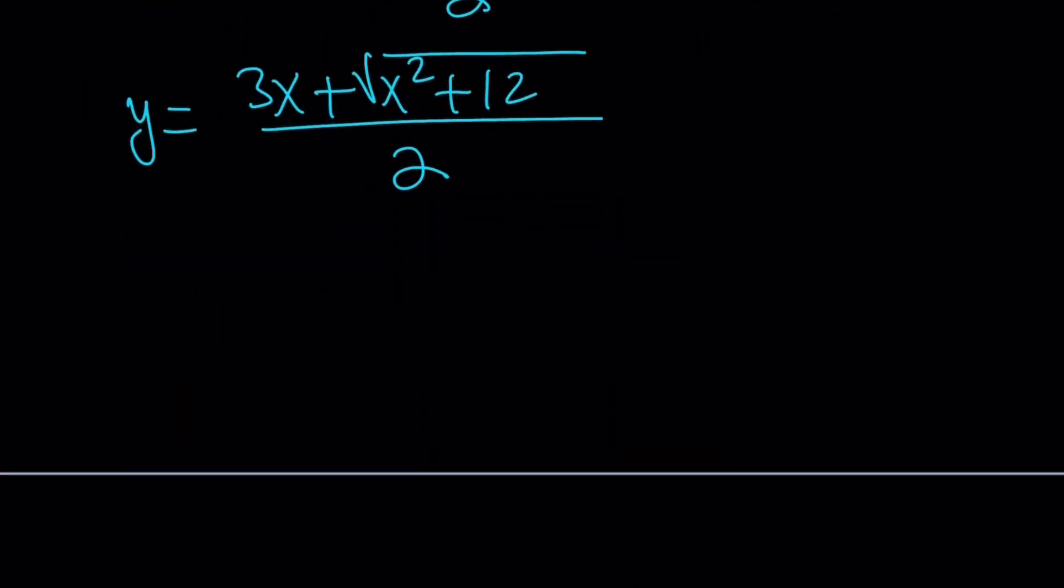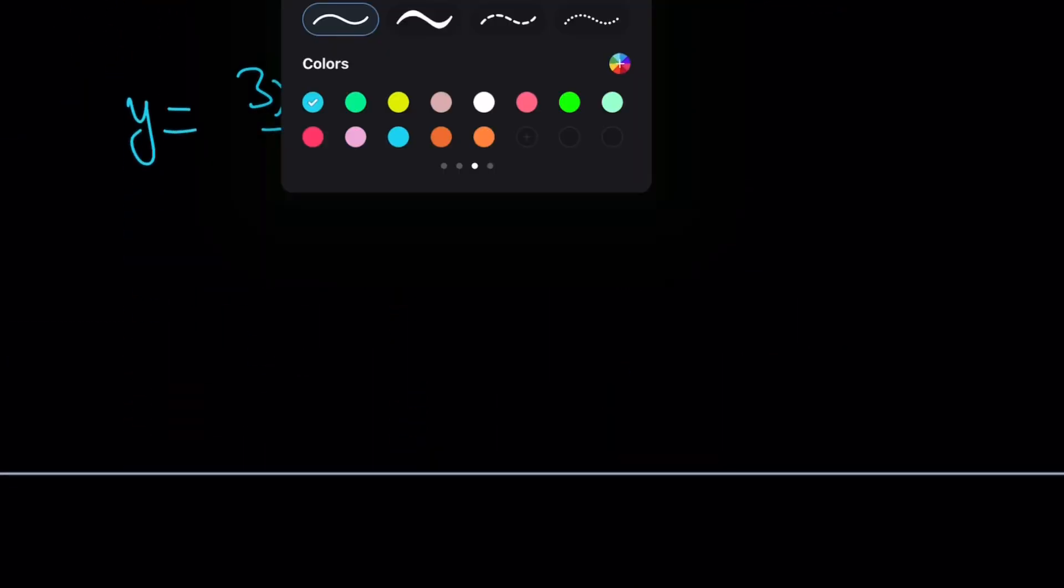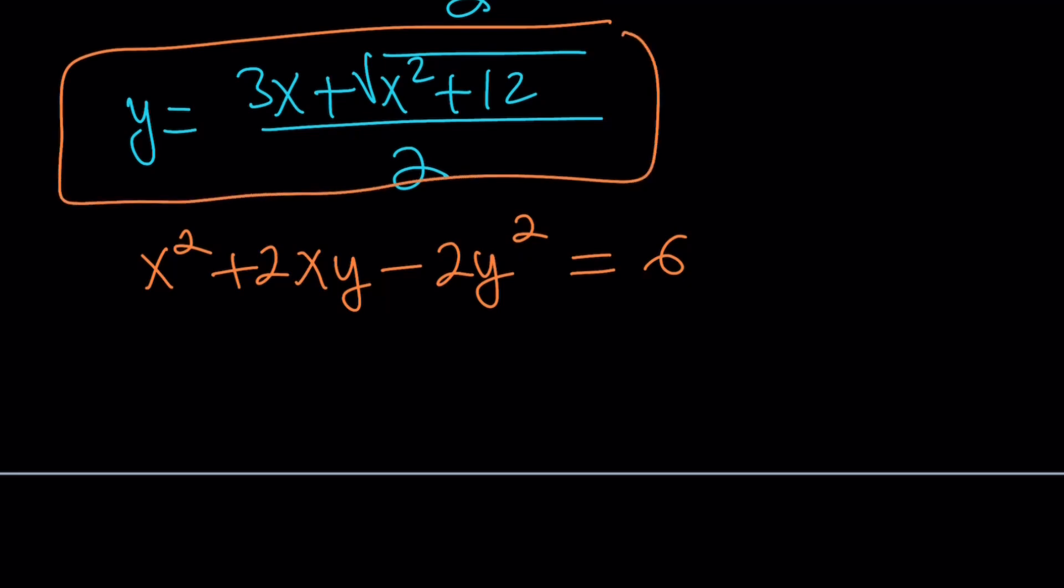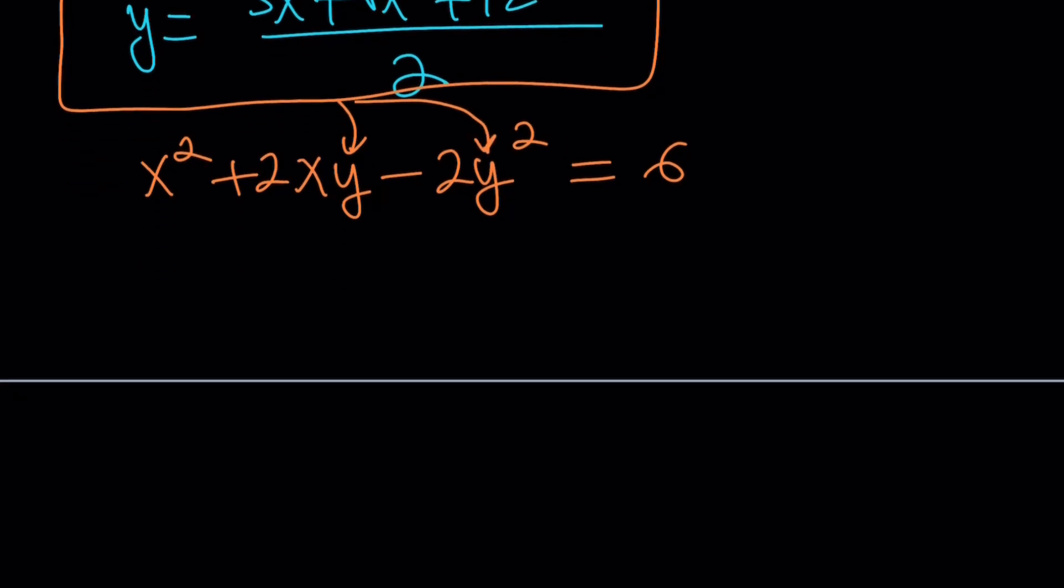Now let me go ahead and copy this second equation here. The second equation is x² + 2xy - 2y² = 6. Now notice that we have a value of y here so we can go ahead and plug that in here and here.